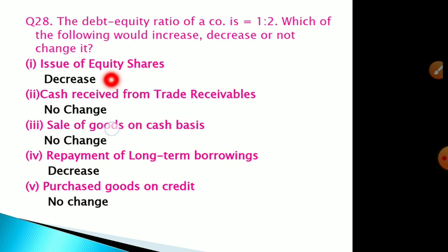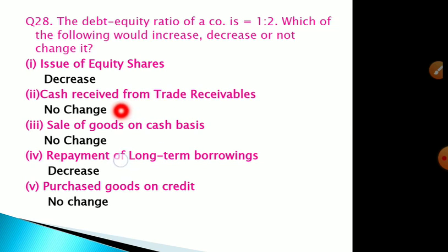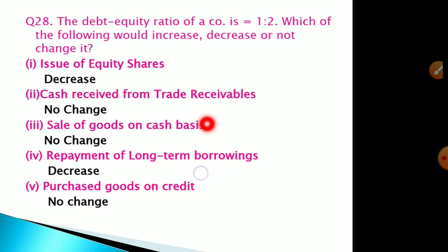Second transaction: cash received from trade receivables. Trade receivables — sundry debtors and bills receivables — are part of current assets, and cash received is also a current asset. Neither debt nor equity is affected, so there is no change in the ratio. Third transaction: sale of goods on cash basis. Inventory decreases and cash increases, but both are current assets. Since neither debt nor equity is affected, there is no change.